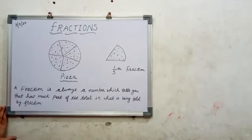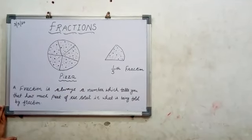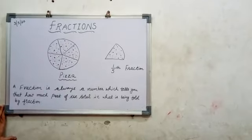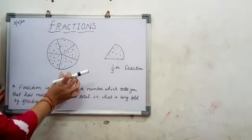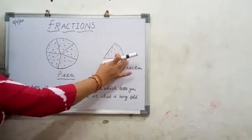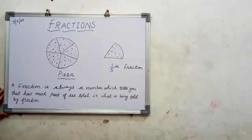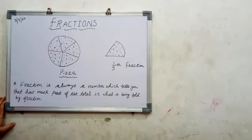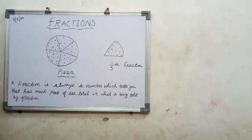Now, if I ask you, how much pizza did you eat? You would say, I ate only 1 part out of 5. This is 1 part. 1 part out of 5 equal parts of pizza. 5 equal slices of pizza.